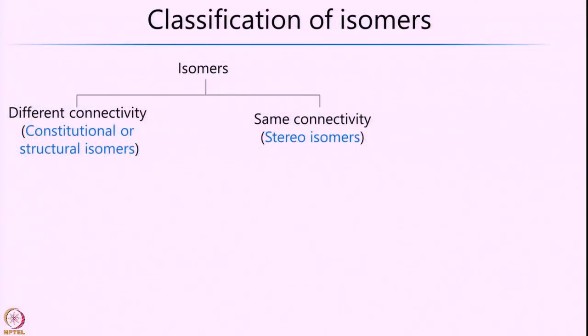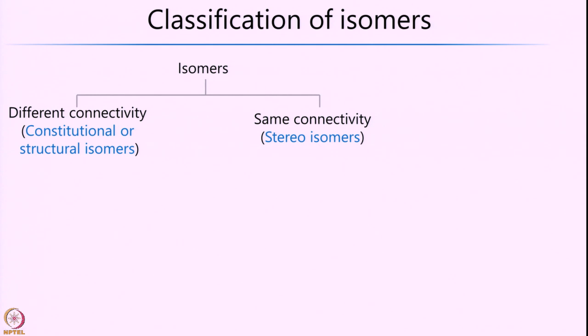With this, let us get into isomers in a little more detail. Isomers are compounds defined as having a similar empirical formula but potentially different chemical and physical properties. These can be subdivided into two categories: constitutional or structural isomers, where atoms are connected in a different manner, and stereoisomers, where the connectivity remains the same but the arrangement in space is different.